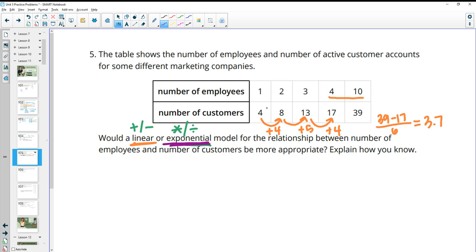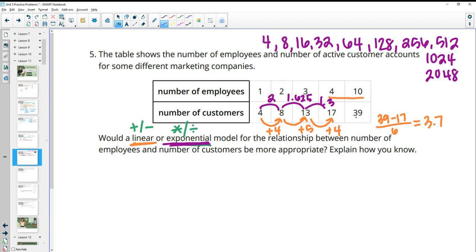If we look exponentially, when we do eight divided by four to figure out what the growth factor is there, you get two, right? And then when we do 13 divided by 8, we get 1.625. And then when we do 17 divided by 13, we get 1.3. So these are pretty far off, right? And if you kept expanding by two, if we looked at just multiplying by two, four times two was eight times two is 16. Then we get to 32 already by four. And if we went all the way up to 10, that would be huge because this is for five, six, seven, eight, nine. And then 10, 2048, if we were doing exponentially versus 39.